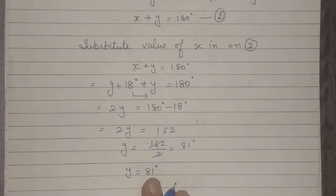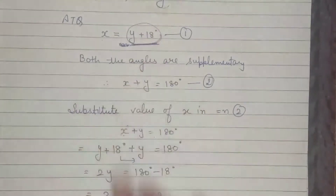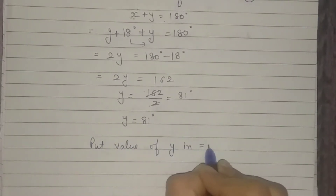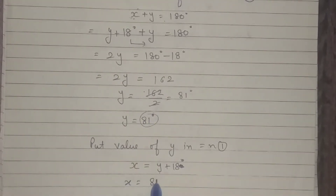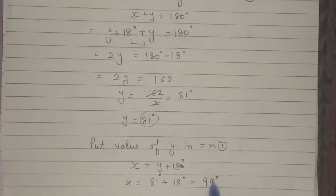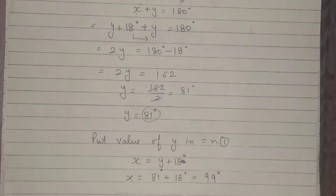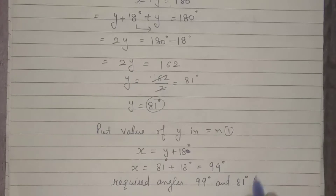Now to find the larger angle, we put the value of y into equation 1. The first equation is x equals y plus 18, so x equals 81 plus 18, which equals 99 degrees. Therefore the required angles are 99 degrees and 81 degrees. This is the final answer.